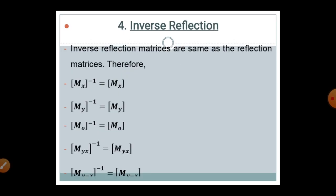Similarly, the inverse reflection matrix is the same as the reflection matrix. Therefore, the inverse matrix of reflection equals the reflection matrix along the X direction, and similarly for Y, the origin, XY, and Y = -X. This is called the inverse reflection matrix.